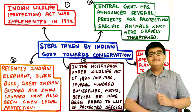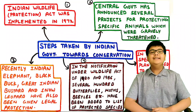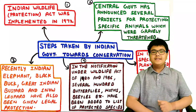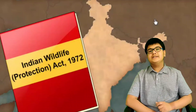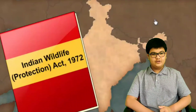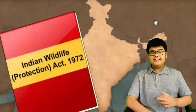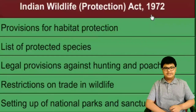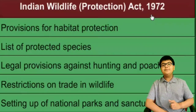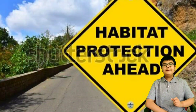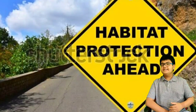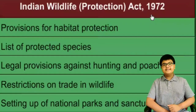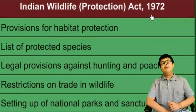Now let us study the steps taken by the Indian government towards conservation of forests and wildlife. First, the Indian Wildlife Protection Act was implemented in 1972. Its salient features include: first, it made provisions for habitat protection and protection of forests and wildlife. Second, an all-India list of protected species was published by the government.